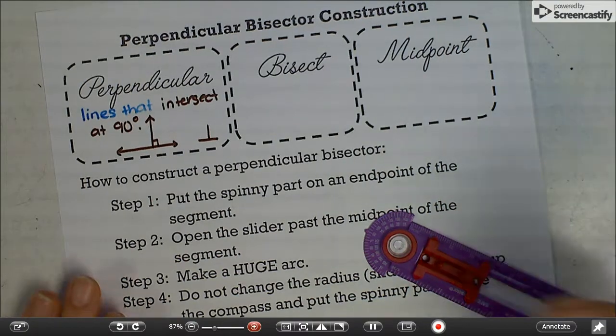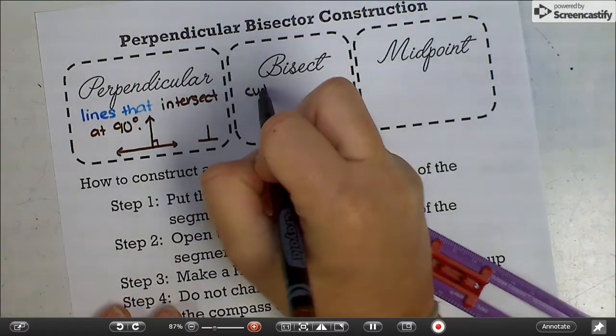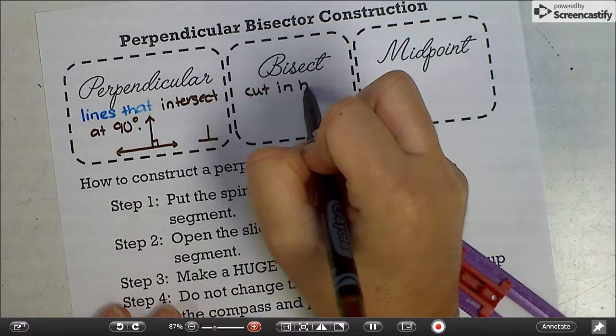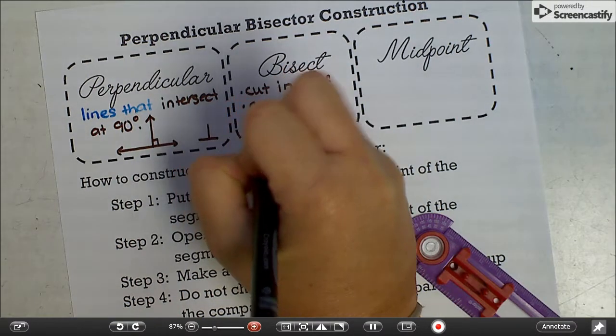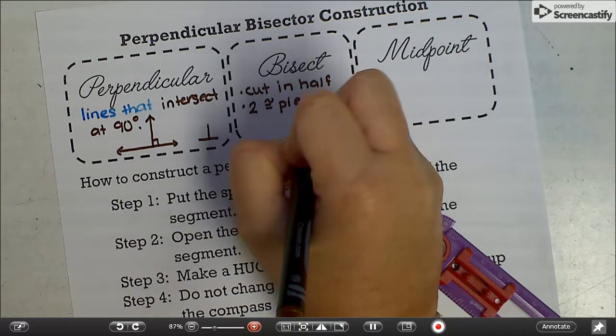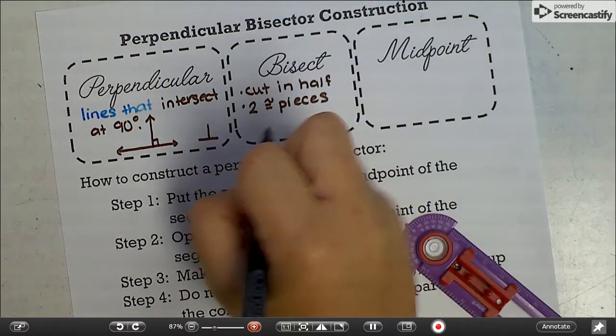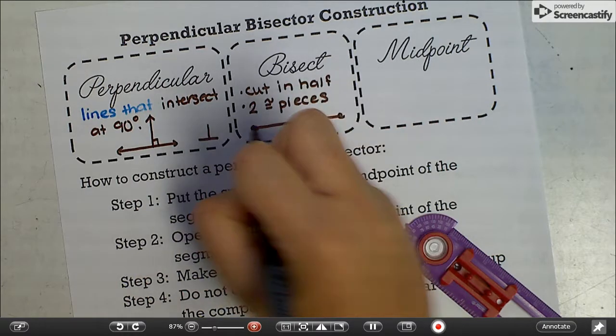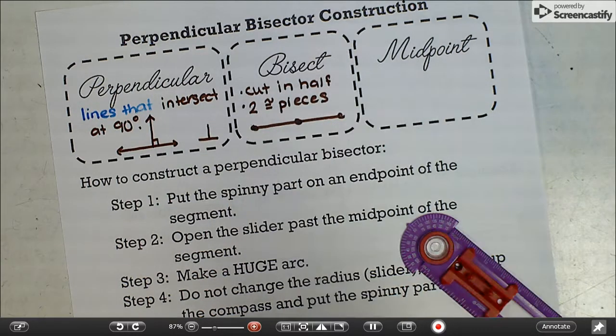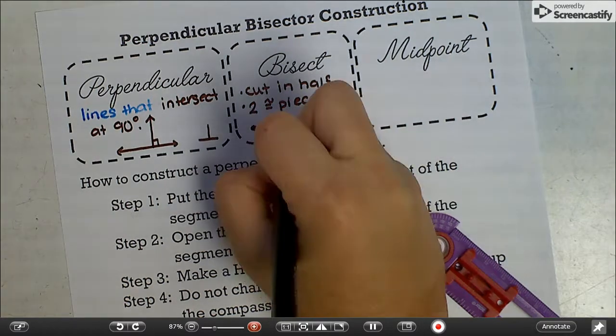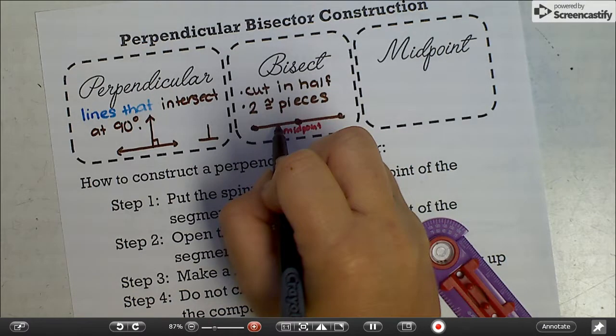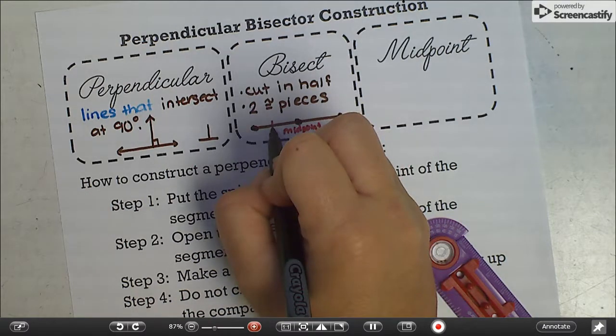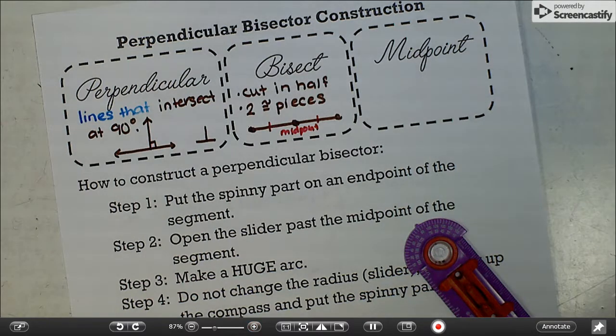We also need to talk about the word bisect, which means to cut in half. It creates two congruent pieces. That's the symbol for congruent. So if we're talking about a segment, and we bisect it and cut it in half, then we end up with a midpoint right here in the middle, and two pieces that are the same as each other, this piece and that piece. And those little straight line marks, those are the marks for congruent pieces.